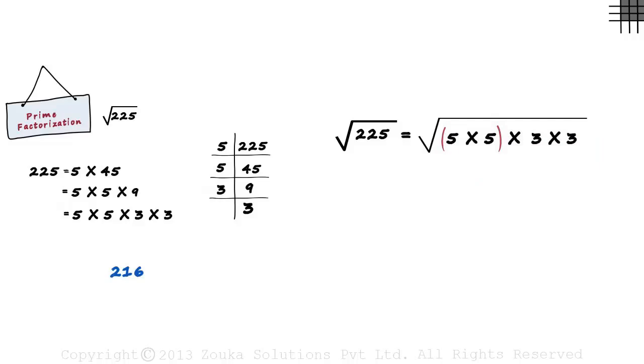This can be our first group, 5 and 5. We can make another group, 3 and 3. We basically formed pairs of same numbers. So we have two pairs of same numbers here. 5 and 5 and 3 and 3.